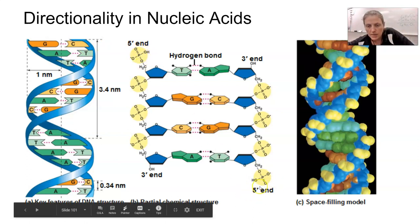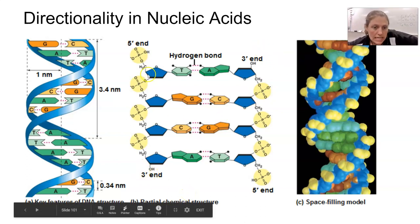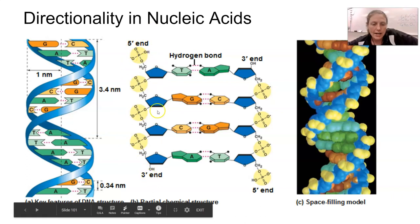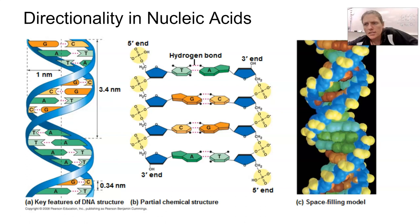Antiparallel means the five prime end is oriented the opposite way on the complementary strand - one strand is right side up and the other is upside down. The three prime end is just the free OH at the end, and they run opposite of each other. These are covalently bonded through the phosphodiester linkages, making up the backbone of our DNA molecule. Across the rungs of this double helix ladder, we have hydrogen bonds binding our nitrogen bases together, and they're very specific about which ones they bond to.